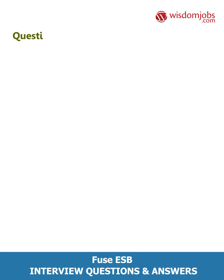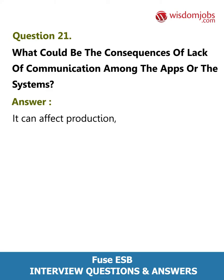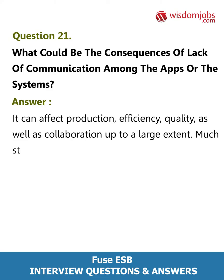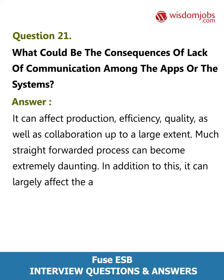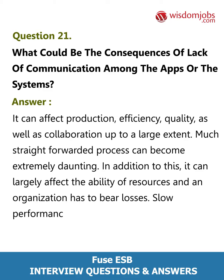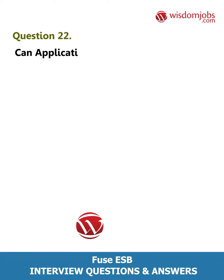Question 21: What could be the consequences of lack of communication among the apps or systems? Answer: It can affect production efficiency, quality, as well as collaboration to a large extent. Much straightforward processes can become extremely daunting. In addition, it can largely affect the ability of resources, and an organization has to bear losses.